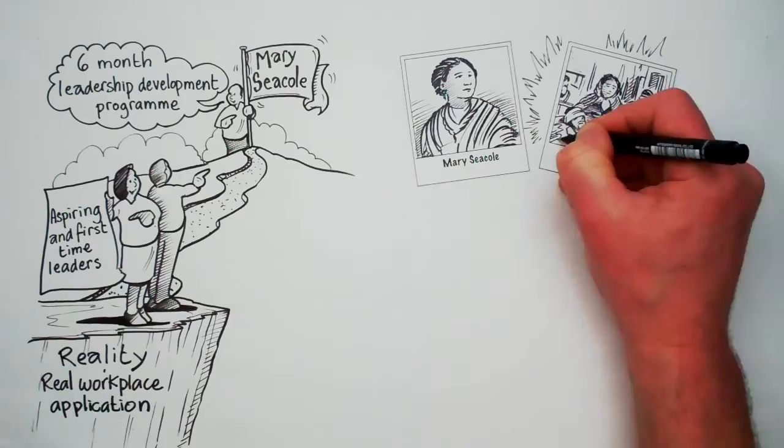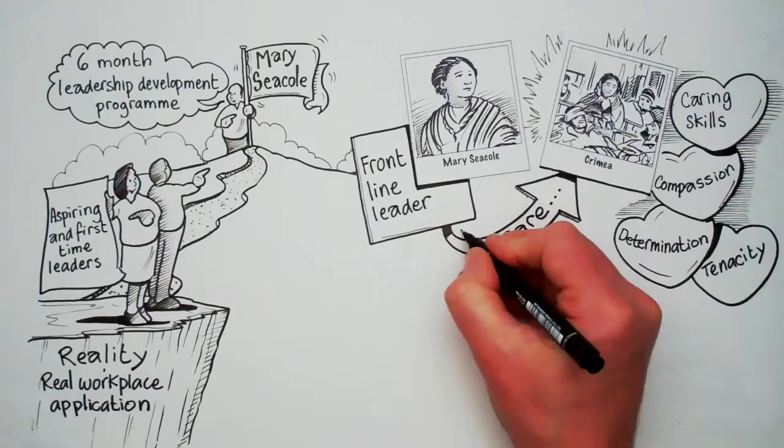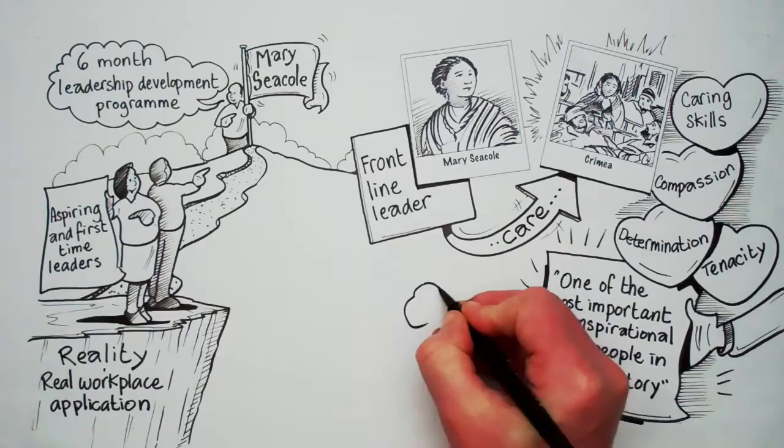Mary Seacole lived in Victorian times and nursed wounded soldiers in the Crimea. She is remembered for her caring skills and compassion, but also her determination and tenacity. She was a front-line leader, giving care directly to the people who needed it most, and has been voted one of the most important and inspirational black people in British history.